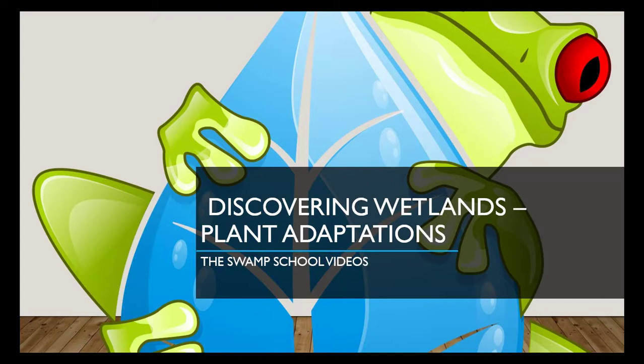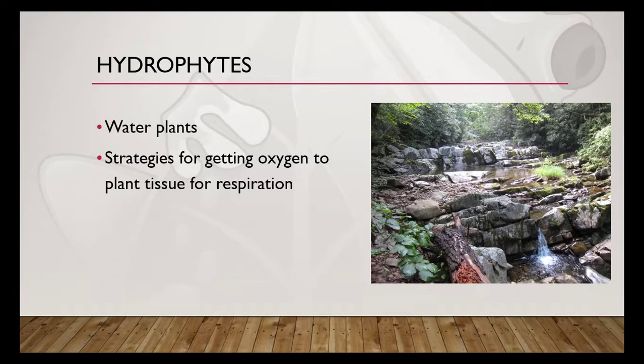Let's get started learning and see why these types of plants are so interesting. First of all, let's discuss what wetland plants are called — they are called hydrophytes, meaning water plants. These water plants are adapted to living in soil that is either permanently or periodically flooded by shallow or sometimes high water, or more likely they're planted in soil that is saturated with water.